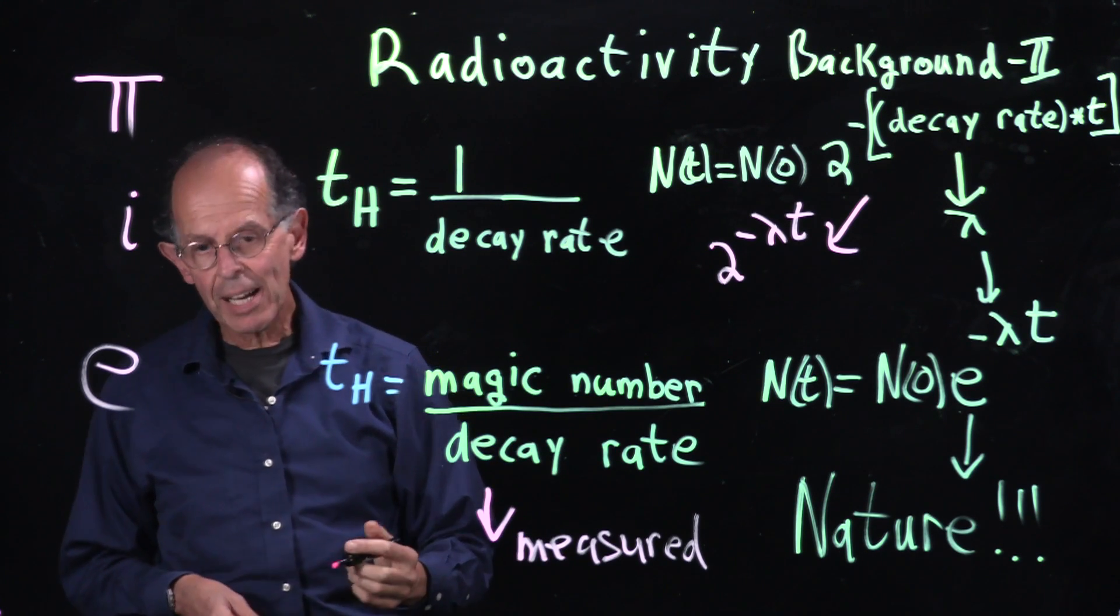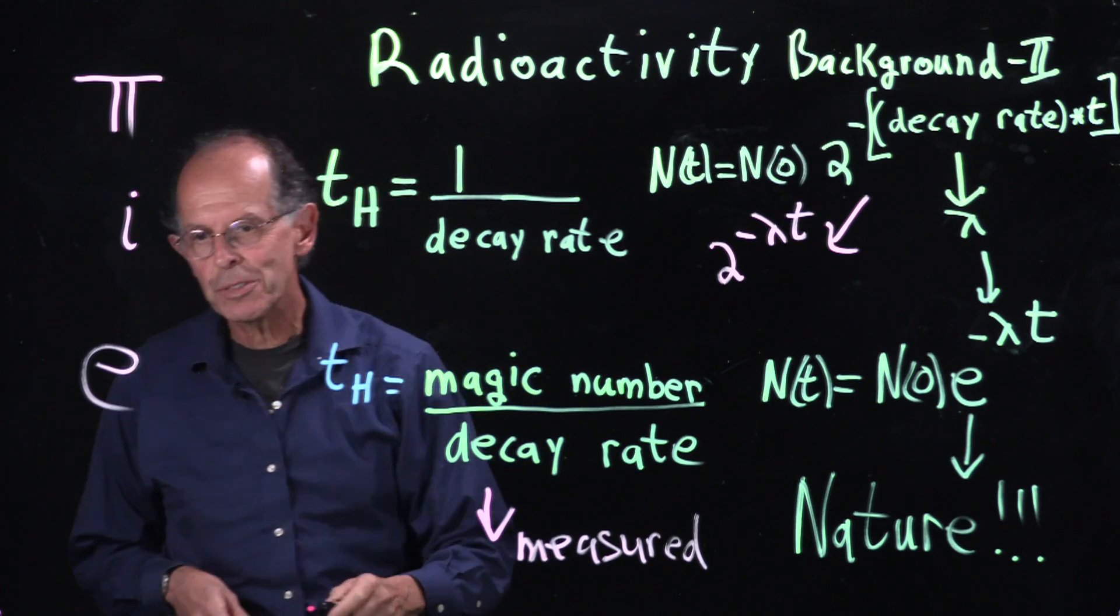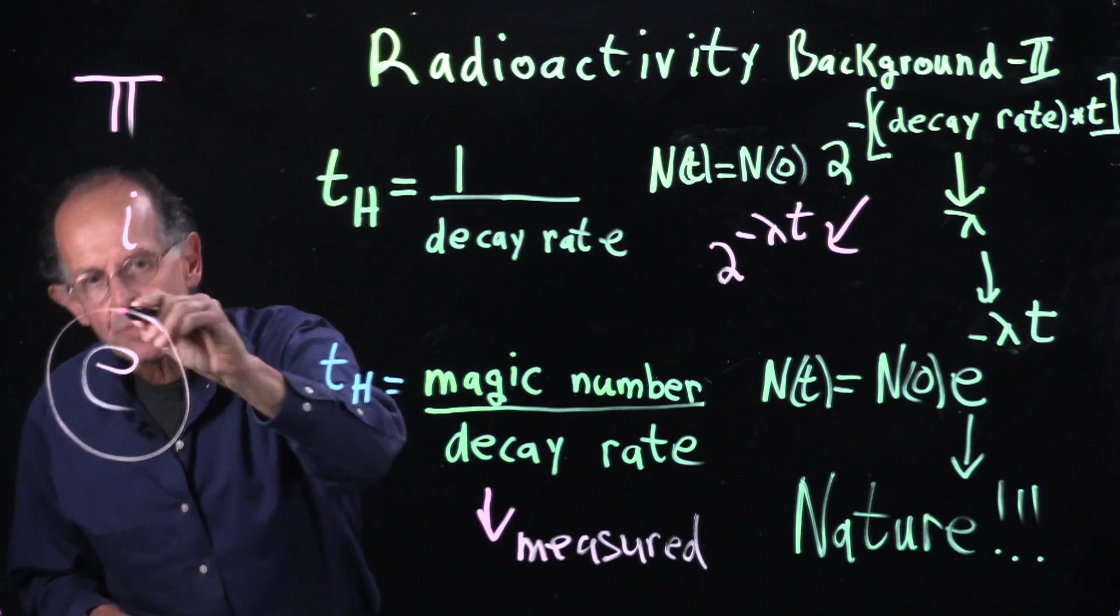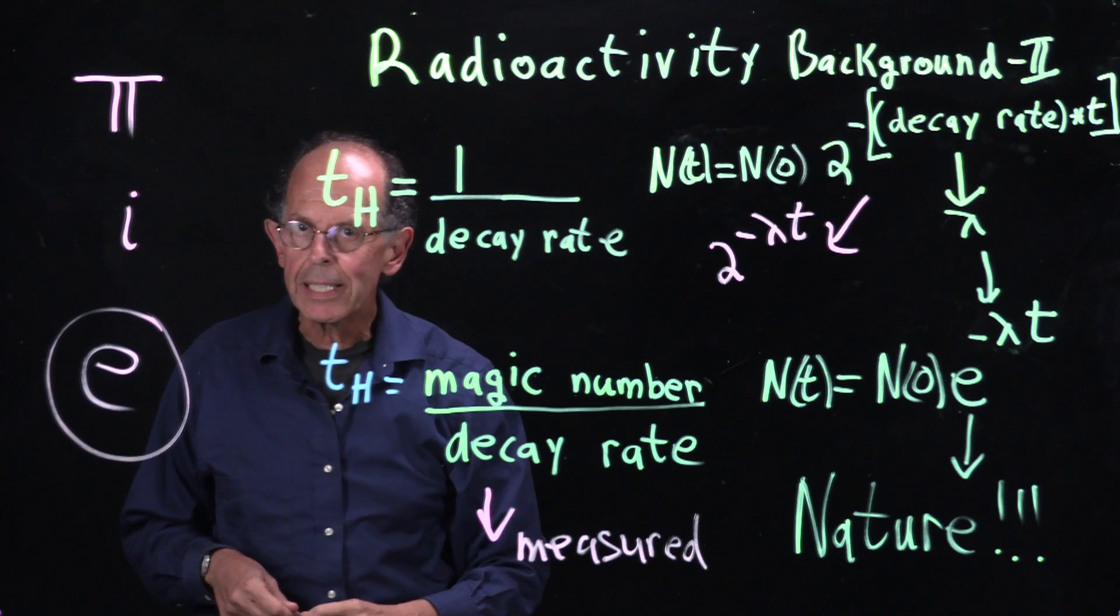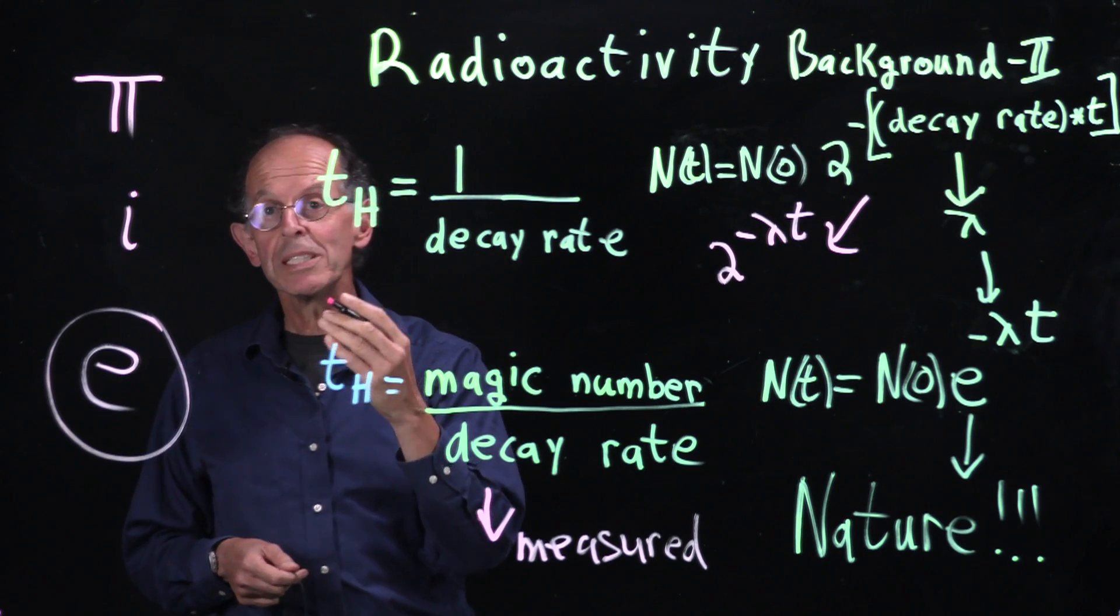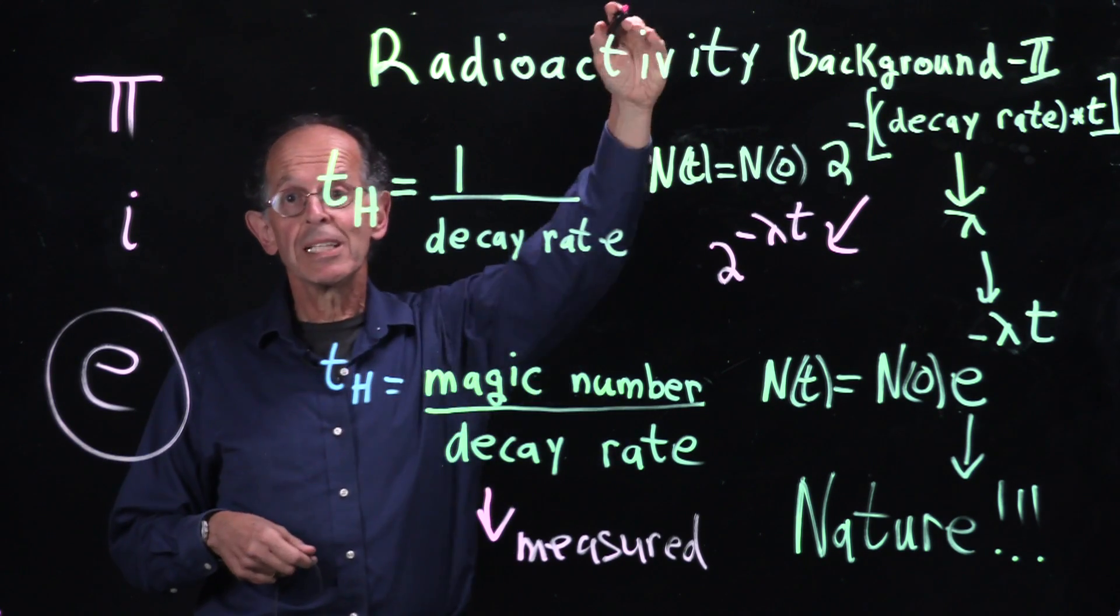And if you do the calculation of how much you'll get after a certain time, out comes the magic number of e. Clearly, that's related to exponential growth.